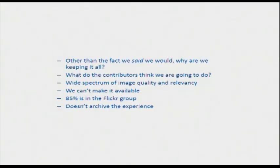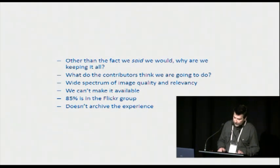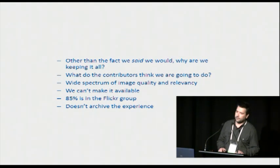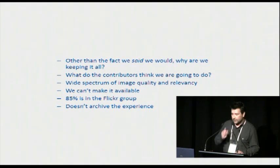So other than the fact that we said we're going to keep it beyond the life of the exhibition, why are we actually doing it? What do the contributors think we've agreed to? Do they think they're part of the collection now? There's a wide spectrum of image quality and relevancy. Some of it breaches copyright. We can't make it available outside of the experience, and 85% of it was actually contributed via Flickr — so that 8,500 are in Flickr and under the control of the users who contributed it. So why do we need to maintain it? And it certainly doesn't archive the OurSpace experience.